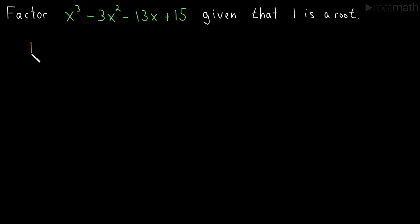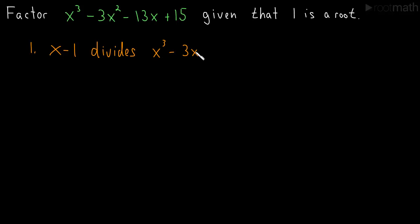The first thing to realize is that since 1 is a root, x minus 1 divides x cubed minus 3x squared minus 13x plus 15. In other words, x minus 1 is a factor of this, so we can factor this and x minus 1 will be one of the terms. Another way of saying that is that x minus 1 actually divides this, so we'll do an actual long division.